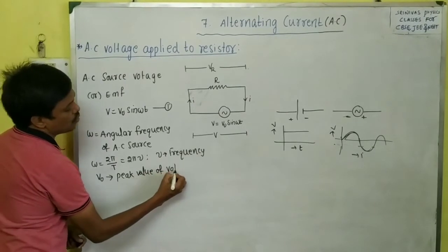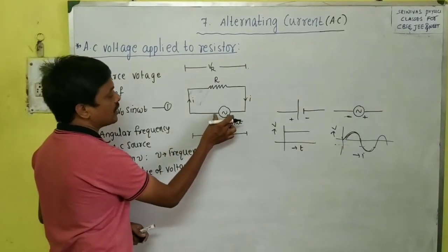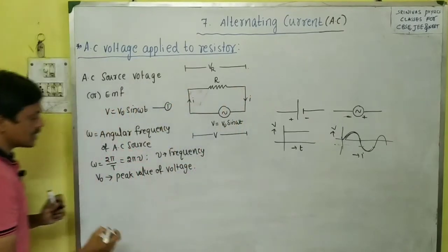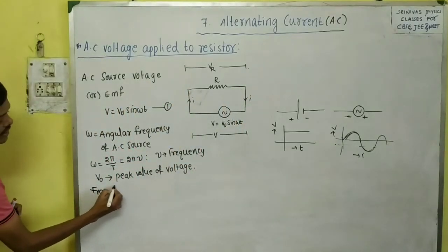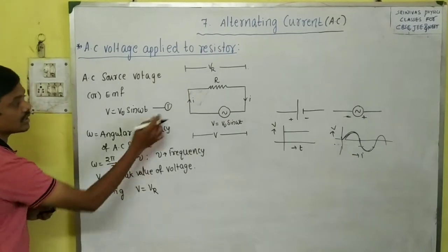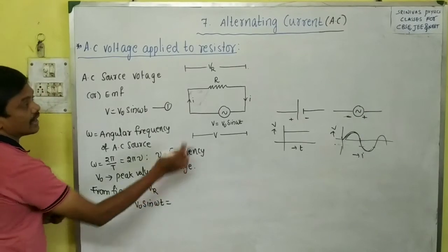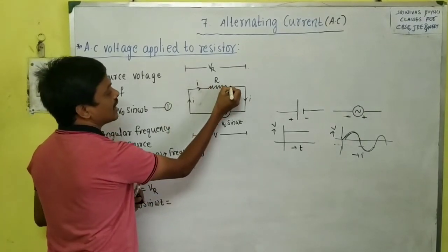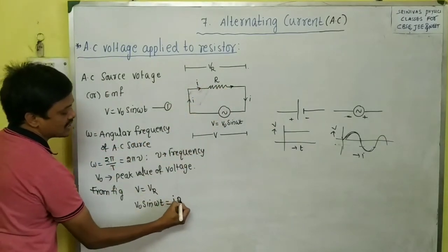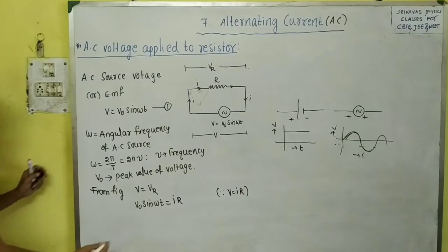When we apply this voltage to a resistor, the voltage across the AC source equals the voltage across the resistance because they are in parallel. So V = V_R. The voltage across the AC source is V₀ sin ωt. If the current in the resistor is I, then the potential difference across the resistance is V_R = IR, from Ohm's law.